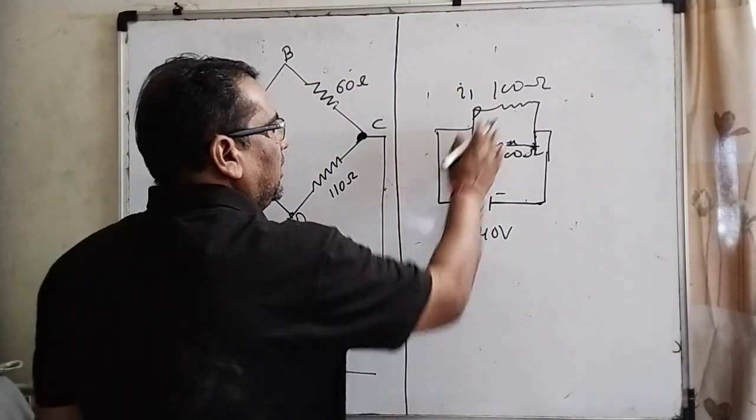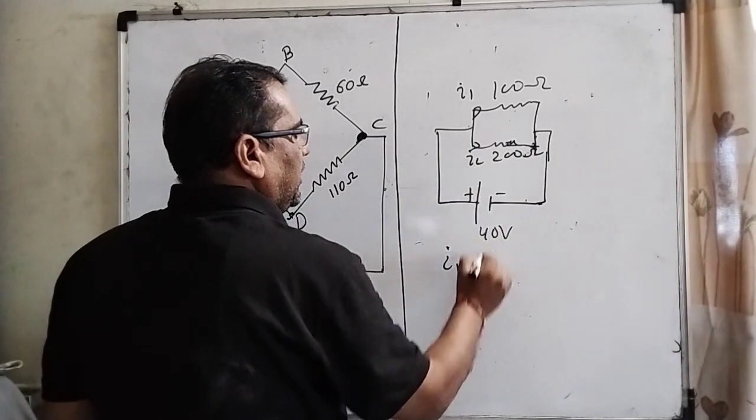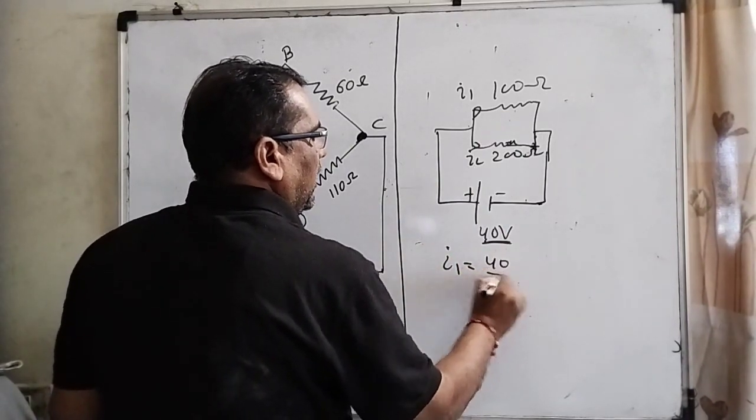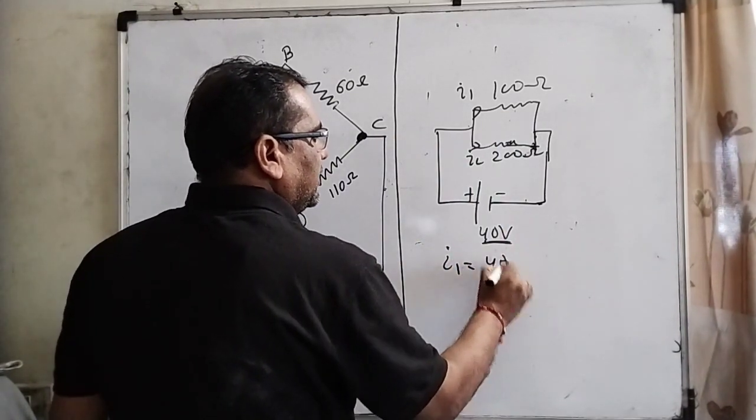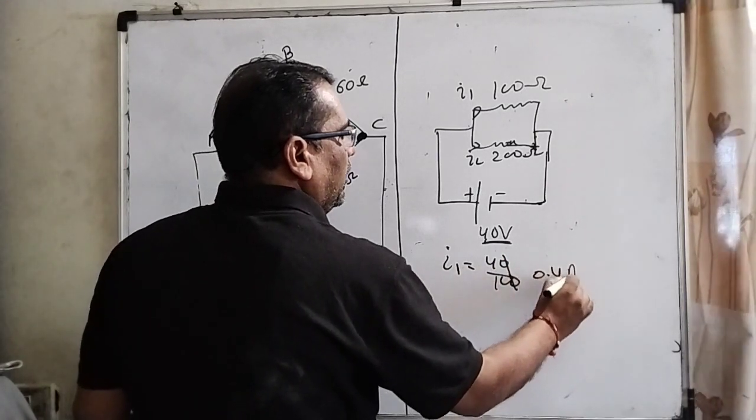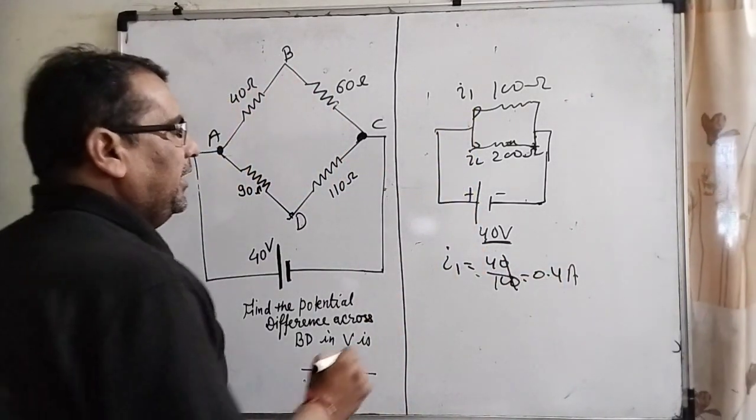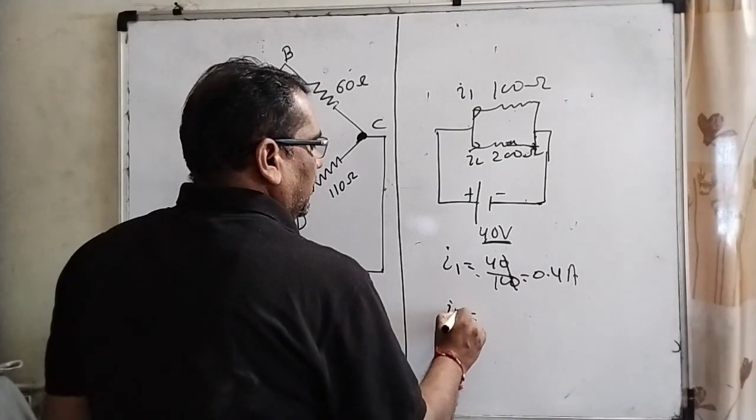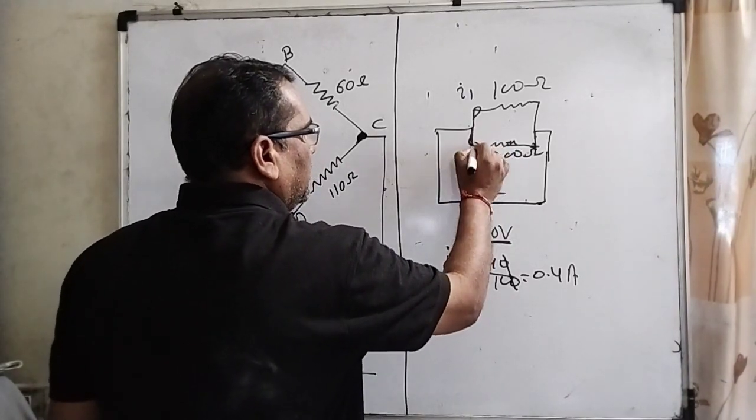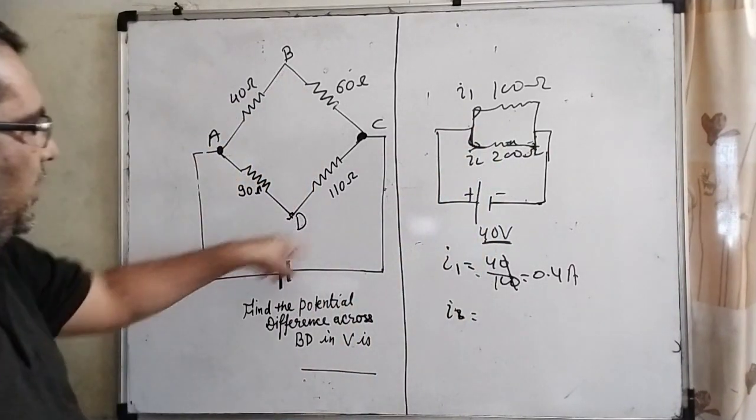Then what is I1? I1 is potential 40 and resistance is 100, then 0.4 amperes. Current is I1. And similarly, I2 current flows from this way, this pathway ADC.